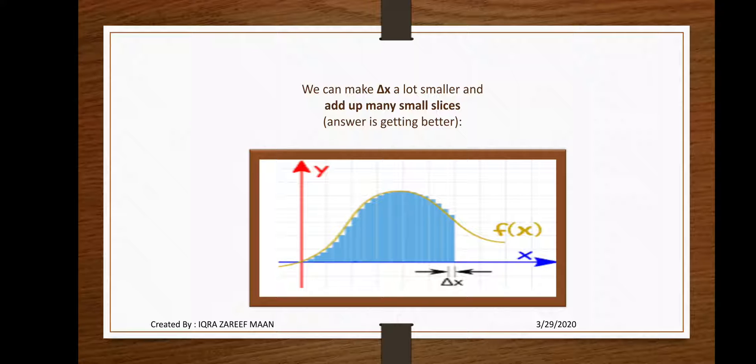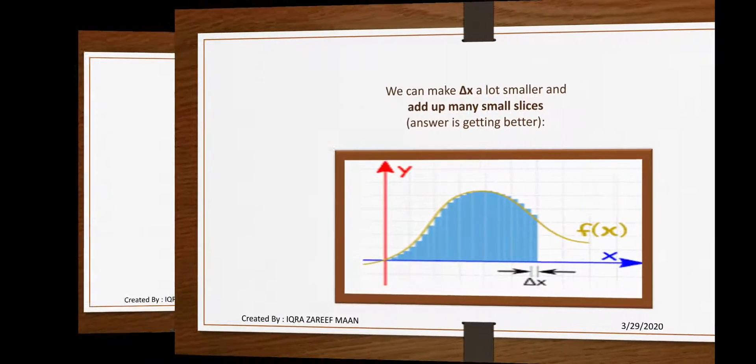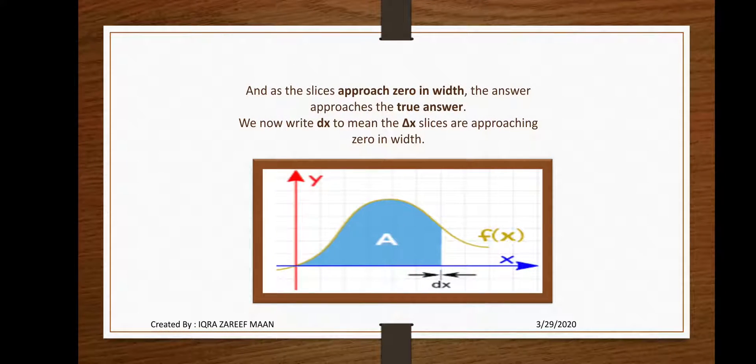As the slices approach zero in width, the answer approaches the true value of the actual area under this curve. We now write dx to mean the Δx slices are approaching zero in width. When these slices approach zero in width, we replace Δx by dx, and this dx we use in the integration process.